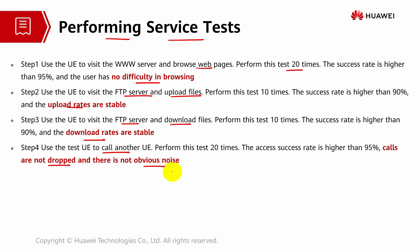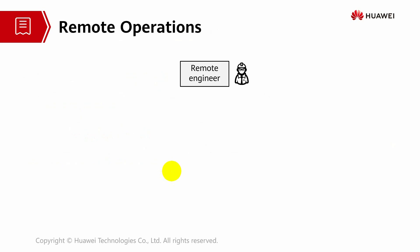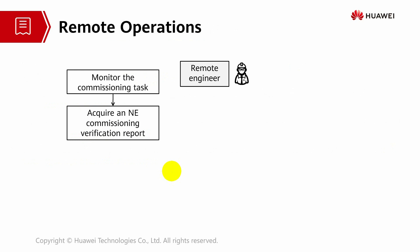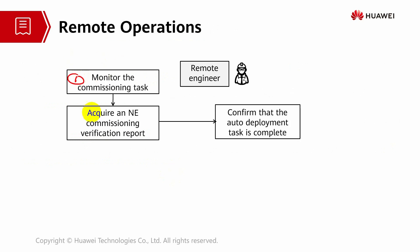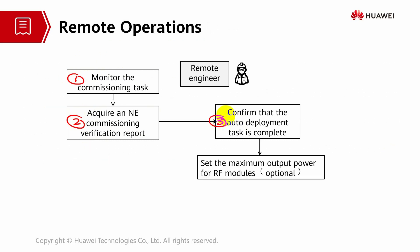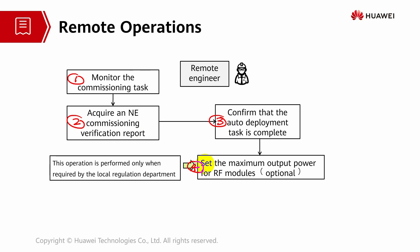Ensure the services are up. For remote operations, the remote engineer monitors commissioning tasks, gets the verification report, and confirms the auto deployment task is complete. They will also do the setting of output power if needed, as this is optional — only if it's impacting the service, especially cell transmit power. If not, you can just leave it. This operation is performed only when required by the local regulation department — so it is upon special request.